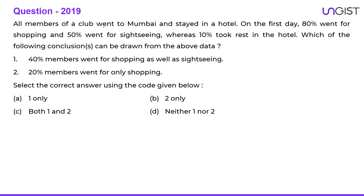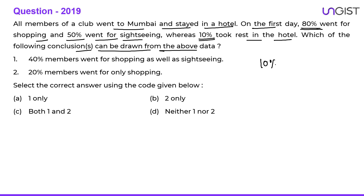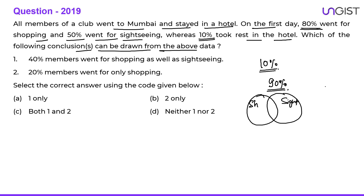Next question: All members of a club went to Mumbai. On the first day, 80 percent went for shopping, 50 percent went for sightseeing, and 10 percent took rest. Since 10 percent rested, only 90 percent went out. Using the inclusion-exclusion formula: 80 + 50 − 90 = 40 percent. So 40 percent are people who went for both shopping and sightseeing.